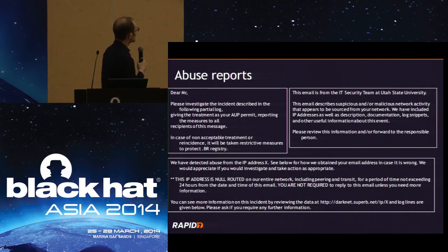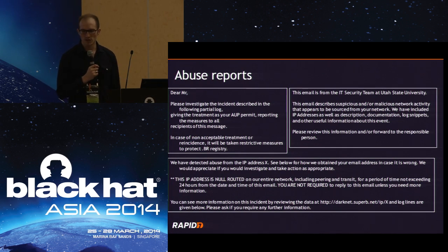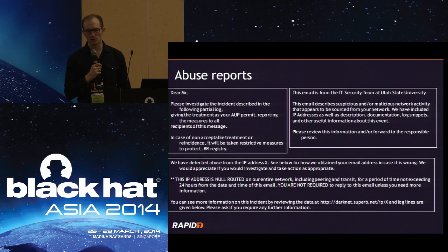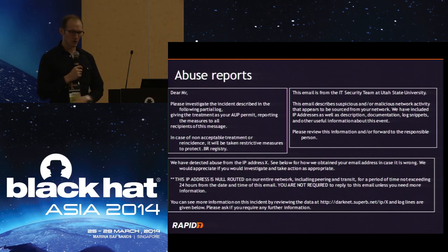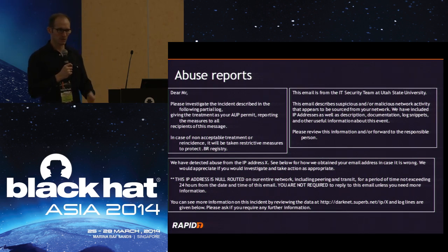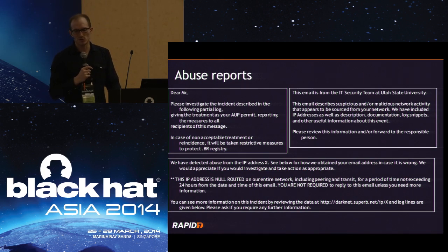This is typically what you get — something like 'please investigate the incident described in the following partial log' or an email from Utah State University saying 'suspicious and malicious activity appears to be sourced from your network.' This is the kind of stuff you get when you do internet-wide scanning. You'll run into monitoring devices, dark nets, and they will send mails to your provider's abuse address. They say they've blocked your IP or your whole network range, because scanning is considered a previous stage to an attack.